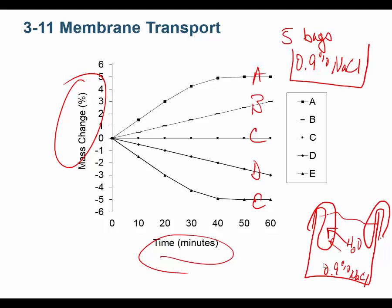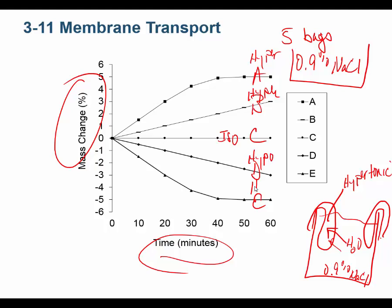So bags A and B were hypertonic. Bag C was isotonic — it didn't gain any weight. Bags D and E lost weight because they lost water — the bags were hypotonic relative to the beaker. Bag D is hypotonic, bag E is hypotonic. That's how you figure these things out when I ask you questions on a graph — you just work your way through it.